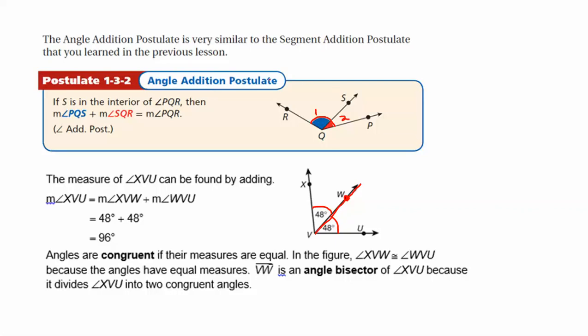So in the first postulate, if you're solving a problem using this, you would say something like angle 1 plus angle 2 is equal to angle RQP. But if you were trying to solve something with an angle bisector, you would most likely say that angle 1 is equal to angle 2. So the way you set up your equation is going to be slightly different if you have congruent angles because there's an angle bisector, or if you're going to be using the angle addition postulate.